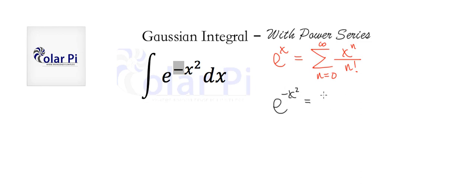Specifically, it will be the sum from n equals 0 to infinity of, instead of x, we'll have minus x squared to the power n divided by n factorial.